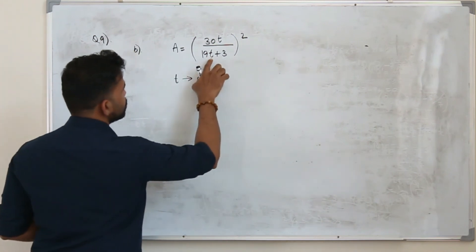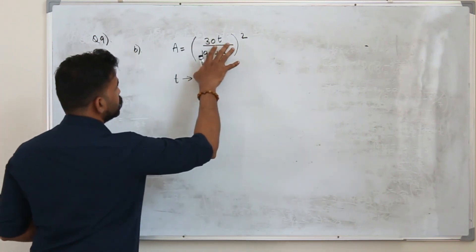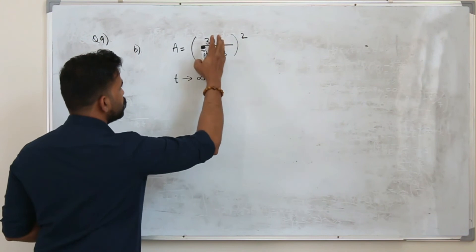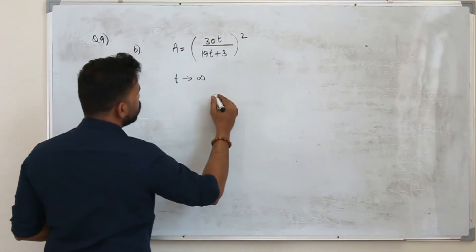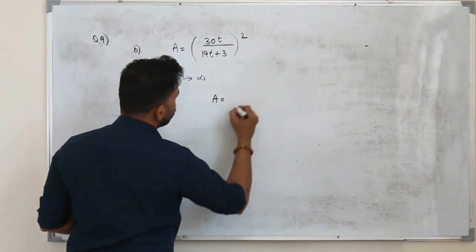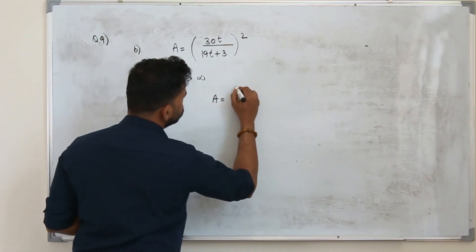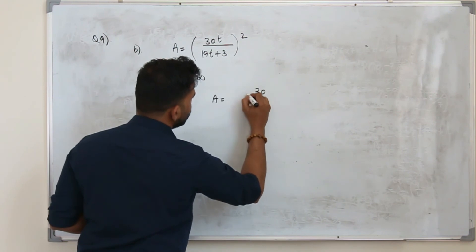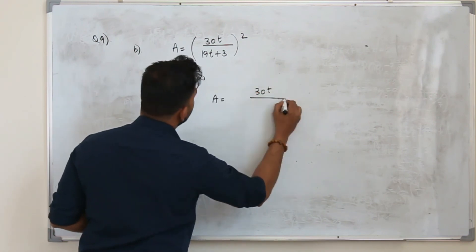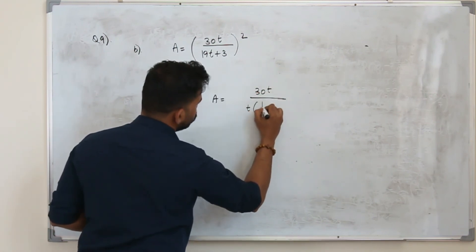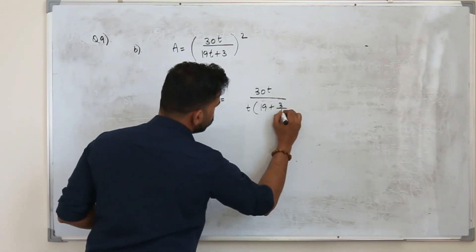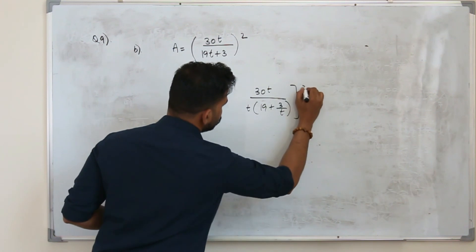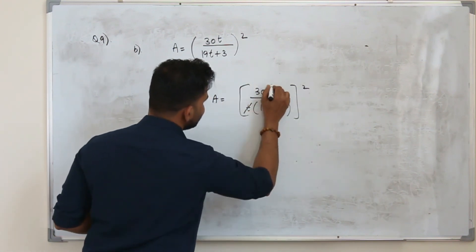So in order to find the limit we are going to replace t by infinity. We cannot just substitute infinity here. So this whole thing is infinity to infinity. So we try to cancel out t by taking t as a common factor. So a will be if you take t as a common factor out, it will be t into 19 plus 3 over t whole square. Cancel this t now.